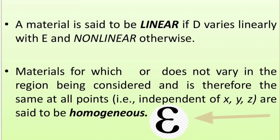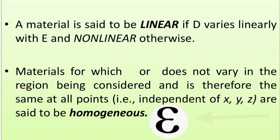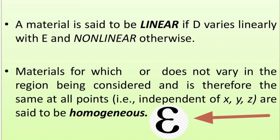A material is said to be homogeneous if permittivity ε and conductivity σ do not vary in the region considered — that is, they are the same at all points in all x, y, z directions. Such a material is called a homogeneous material.